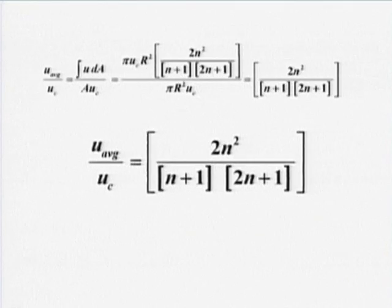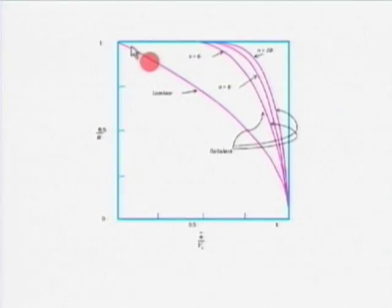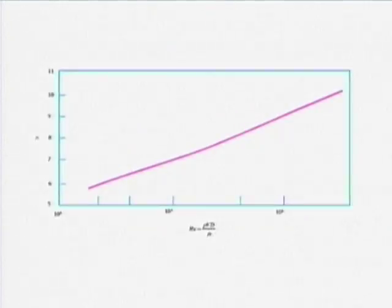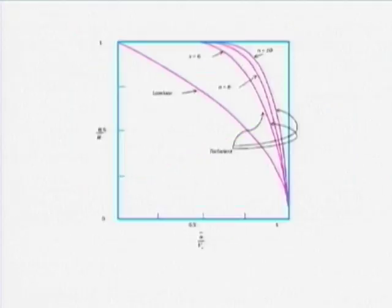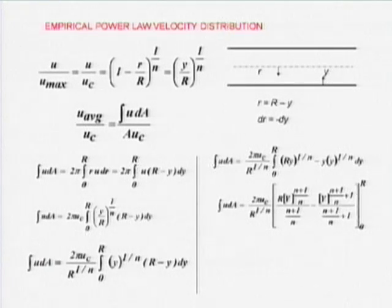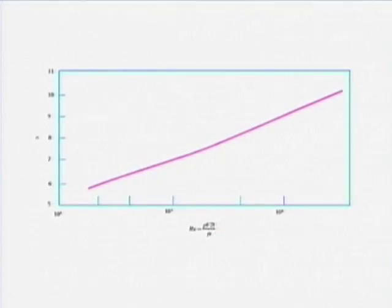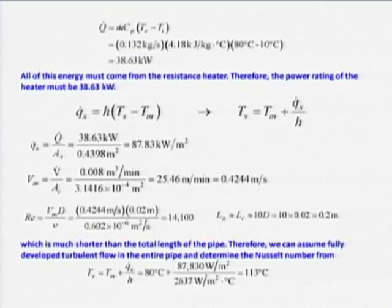We will take questions rather than solving plug-in problems. The procedure for such problems is: find Re, pick the right friction factor correlation, pick the right Nusselt number correlation, get the heat transfer coefficient, and get the heat transfer rate. These are straightforward plug-in problems.